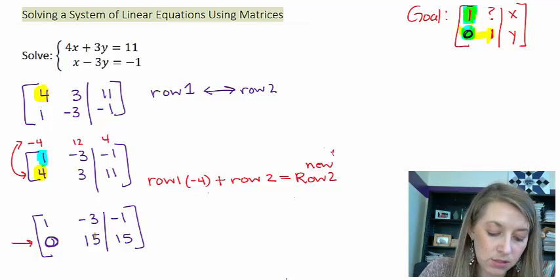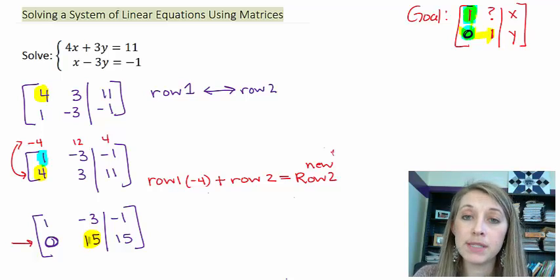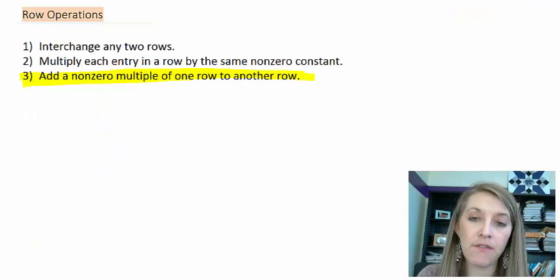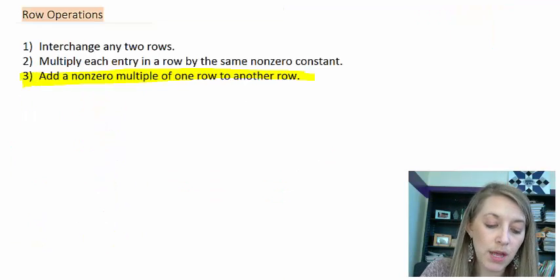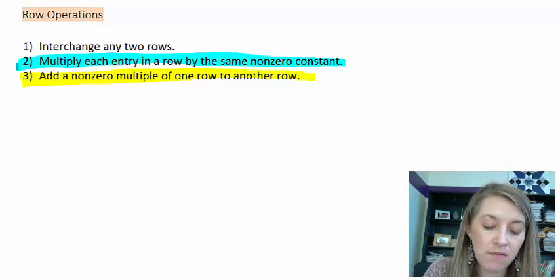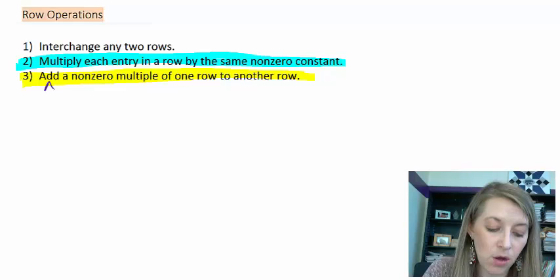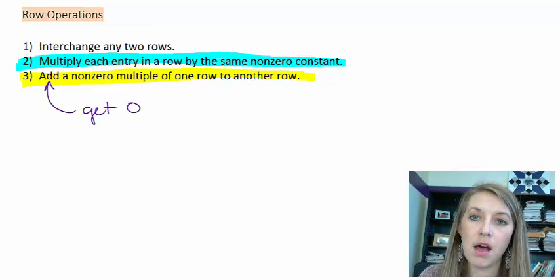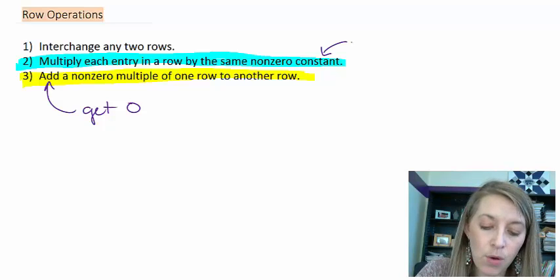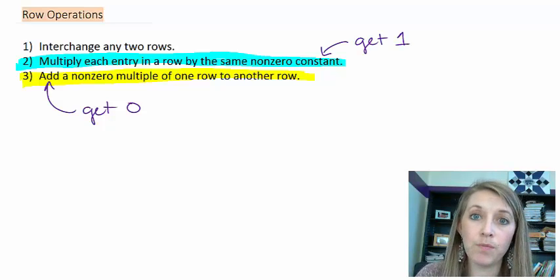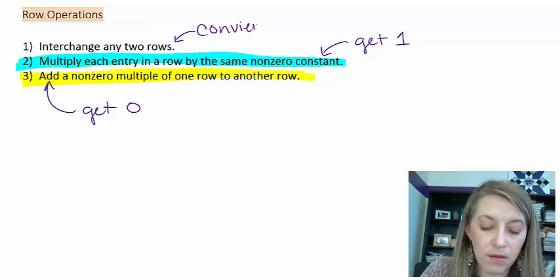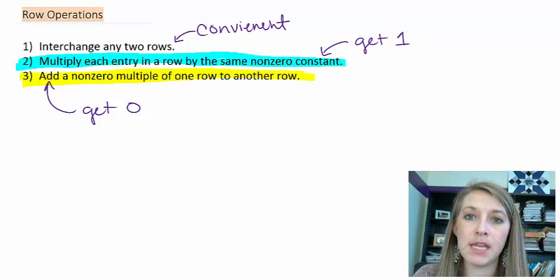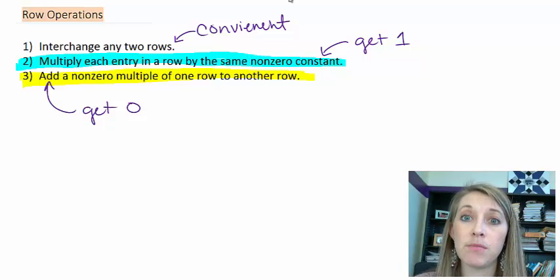Now my next step is to figure out how to make this 15 into a 1. Now typically, not always, but typically, whenever I want to get a 1, that's when I use option number 2. So this is kind of the method that I use. Whenever I want to get a 0, I use step number 3. And whenever I want to get a 1, I use step number 2. And whenever it's convenient, that's when I use step number 1. So these are kind of the steps that I use. Now these aren't the only ways that these steps can be utilized. That's just the way that I use them primarily.